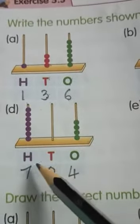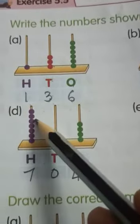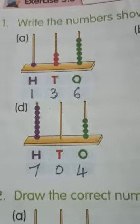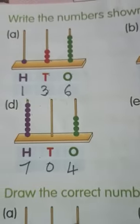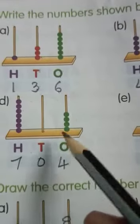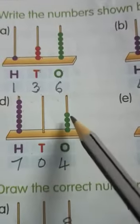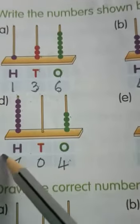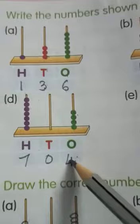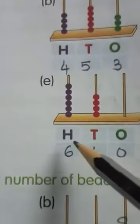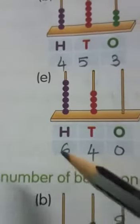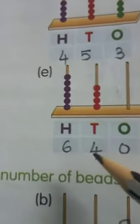Next, on the hundreds place we have 7 beads, but on the tens place there are no beads, so that is 0. On the ones place we have 4 beads, so the number here is 704. Next, on hundreds we have 6, on tens we have 4, and on ones we have 0, so the number here is 640.